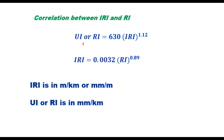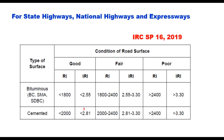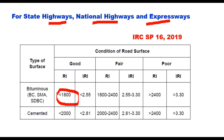Some instruments provide roughness directly in terms of IRI, whereas some provide it in terms of unevenness index or roughness index (RI) — such as the fifth wheel bump integrator, which provides bumps in mm/km. Conversion equations are available to convert IRI to RI or RI to IRI, where IRI is the International Roughness Index in m/km and UI is unevenness index in mm/km. IRC SP 16:2019 provides acceptable criteria for roughness index or IRI values for different road categories, including state highways, national highways, and expressways, with limits for good, fair, and poor road surface conditions across different surfacing types.